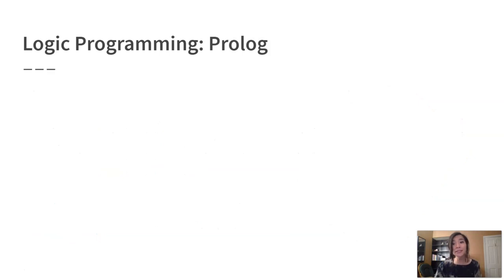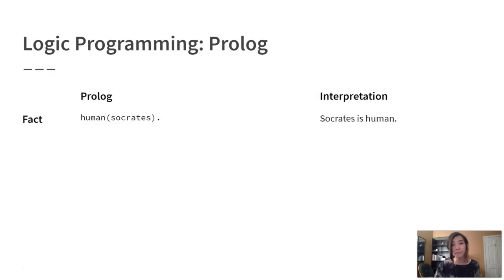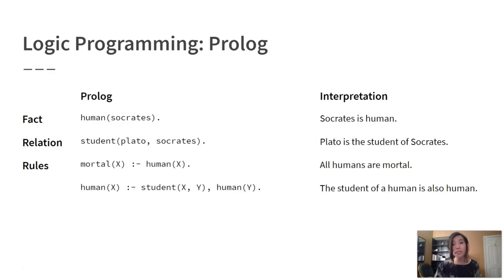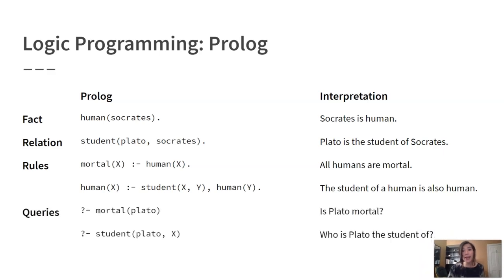Prolog can deduce this because it encodes the semantics of first-order logic. This allows us to express our knowledge about the world not as procedures, but as facts about entities, relations between entities, and rules about which facts and relations imply other facts and relations. Using this knowledge, Prolog's reasoning engine can answer queries about which unstated facts might apply, and which entities are in relation with one another.